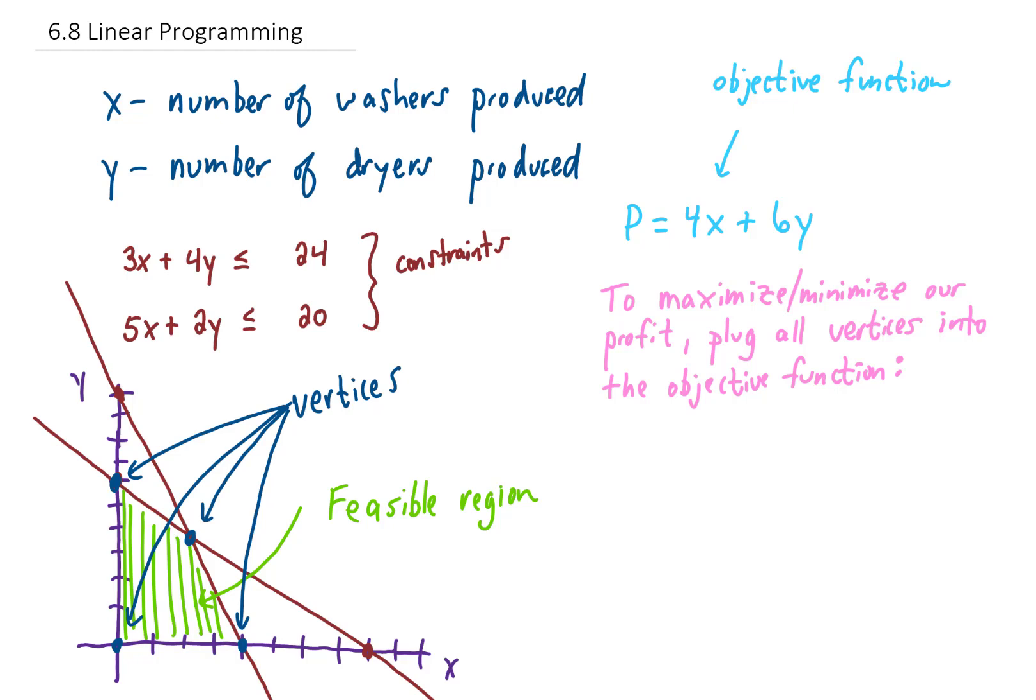In other words, if we want to maximize our profit for this washer and dryer factory, we are going to plug all of the values for the vertices into our profit function. So let me clean this picture up a little bit. We want to find all of the values for all of our vertices.